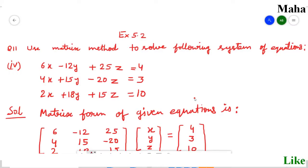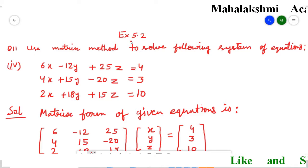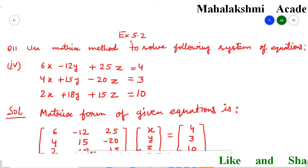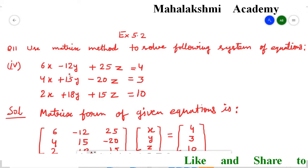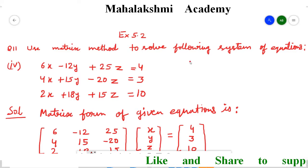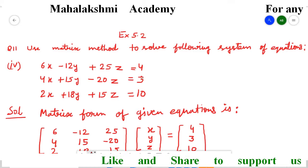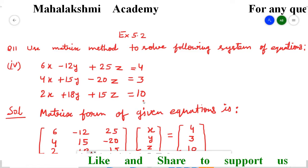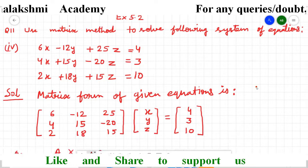Hello everyone. I am going to explain question number 11 from exercise 5.2. This question belongs from 12th class maths RBSC board. The question is: use matrix method to solve the following system of equations. Three equations are given to us and with the help of matrix method we have to solve this.